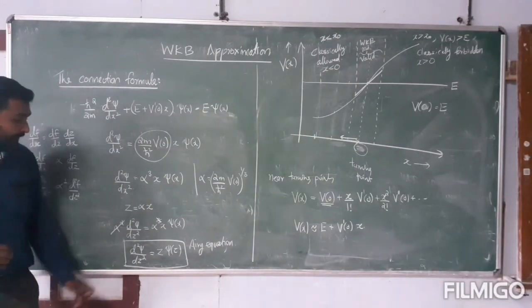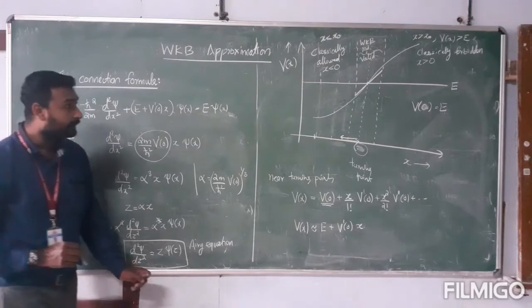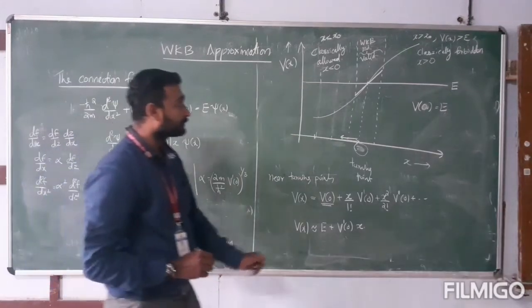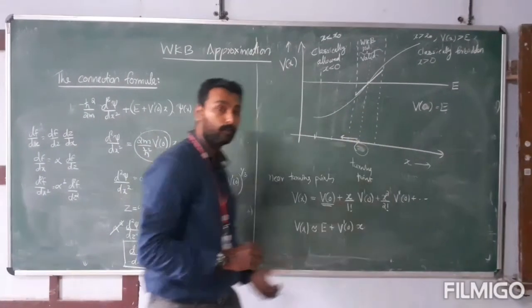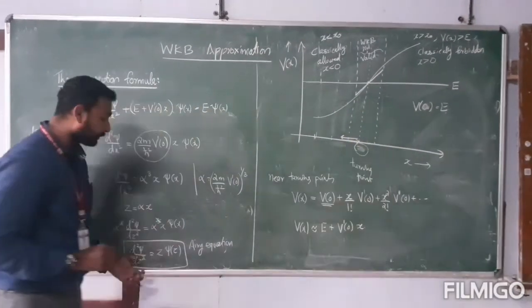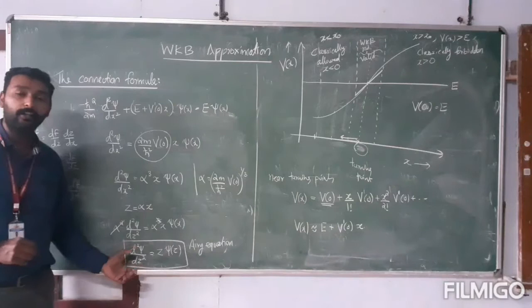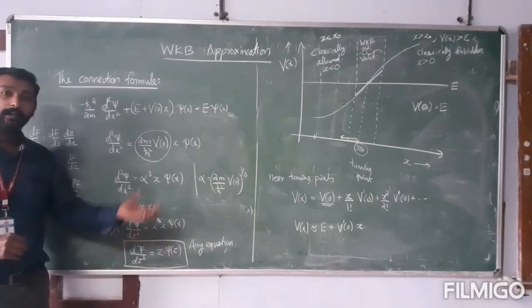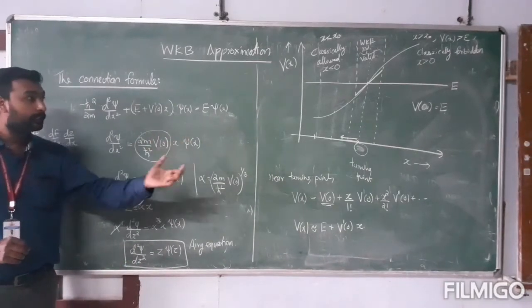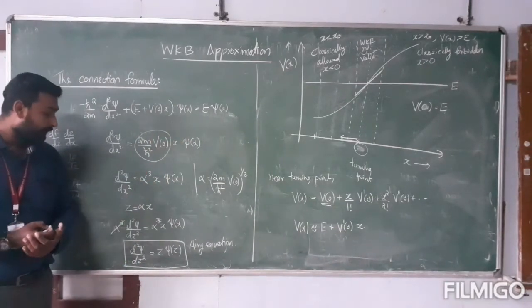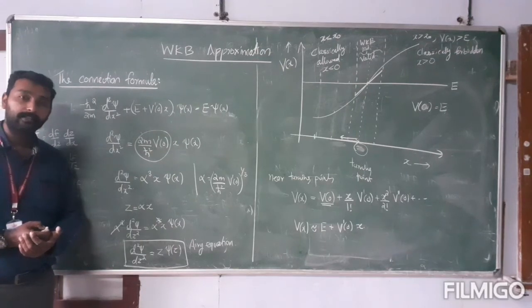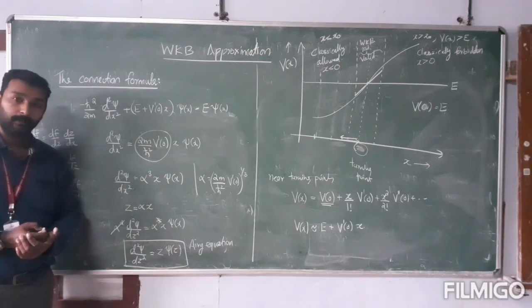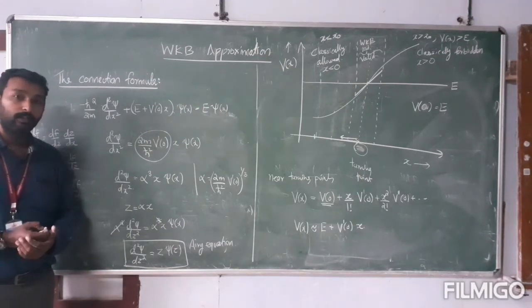So that means near the turning points, the Schrödinger equation takes the form of the Airy equation, and therefore near the turning points the wave function can be expressed as Airy functions. In the next session, we will discuss what the Airy functions are and how to use the wave function in order to find the connection formulas.